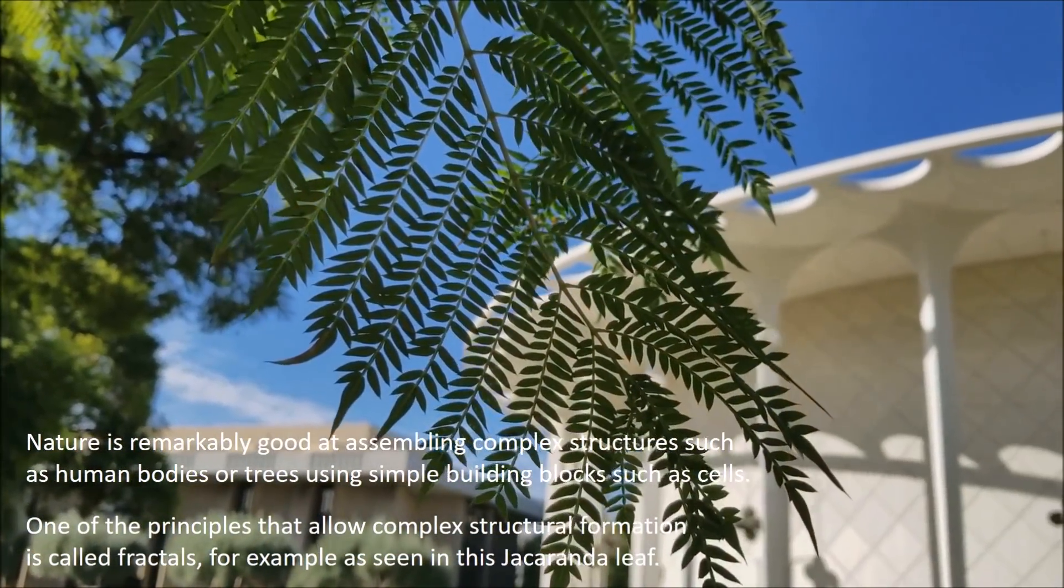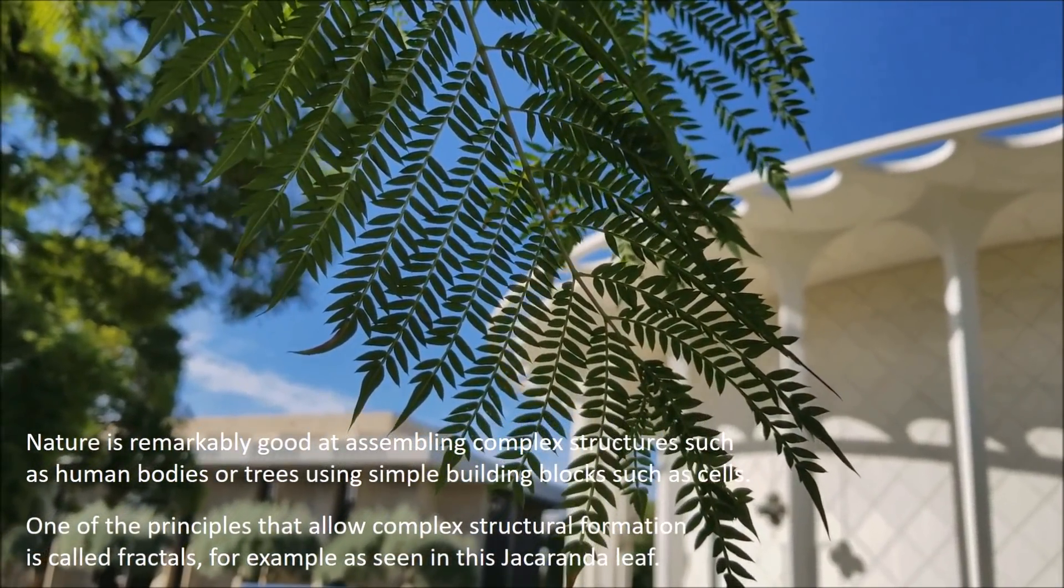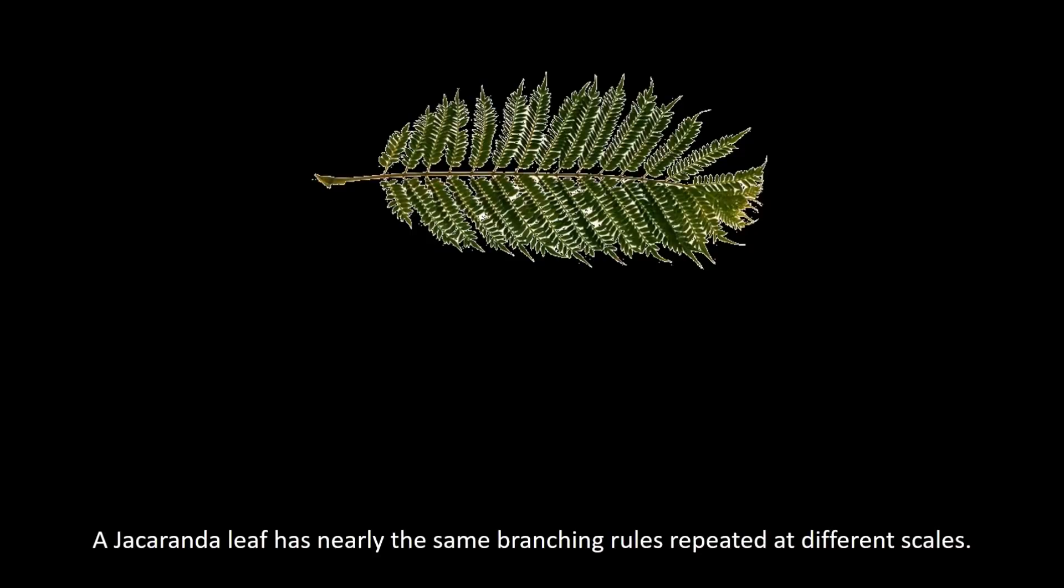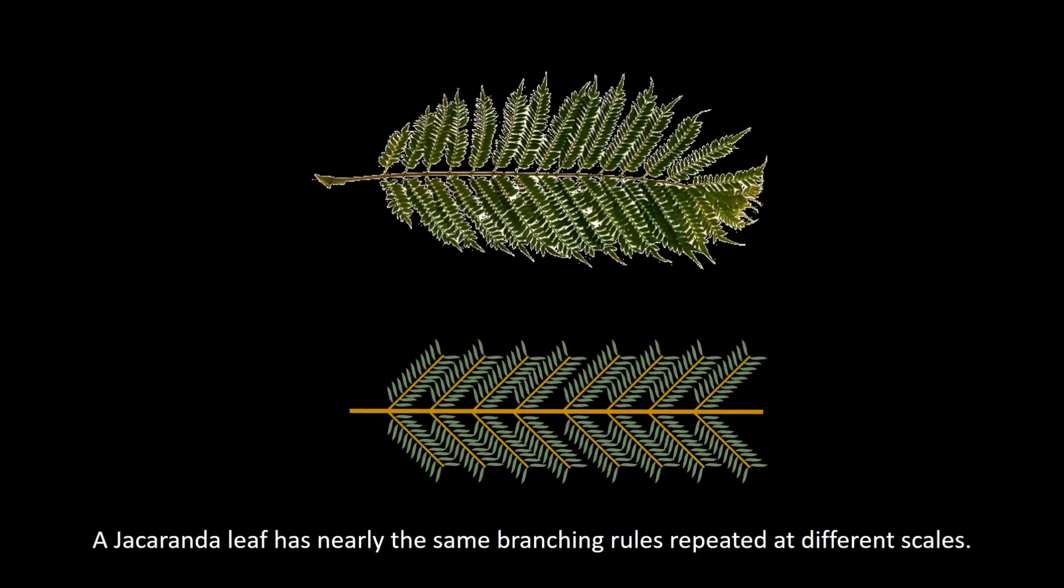One of the principles that allow complex structural formation is called fractals, for example as seen in this jacaranda leaf. A jacaranda leaf has nearly the same branching rules repeated at different scales.